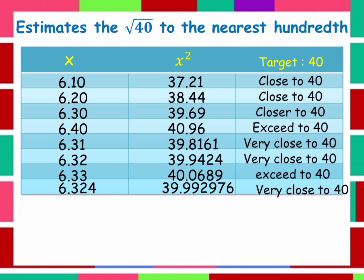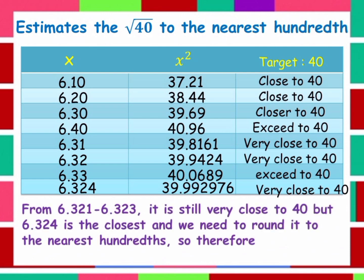Always remember: from 6.321 to 6.323 it is still very close to 40, but 6.324 is the closest. We need to round it to the nearest hundredth. Therefore, the square root of 40 is equal to 6.32.